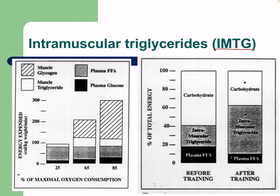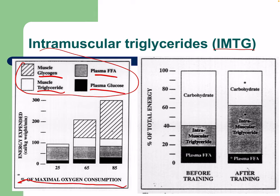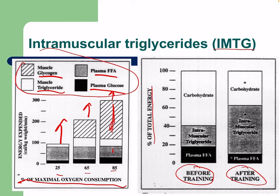We have intramuscular triglycerides, muscle glycogen, plasma free fatty acids, and plasma glucose as fuel sources measured as a percent of maximal oxygen consumption — our VO2 max. As intensity goes up, energy expenditure increases and we use a lot of muscle glycogen, which is why carbohydrates are called the primary energy source. After training, active individuals use triglycerides more than anything else, whereas untrained individuals rely more on carbohydrates.